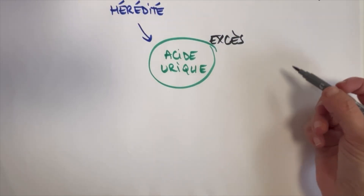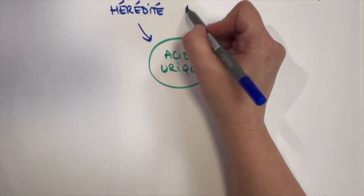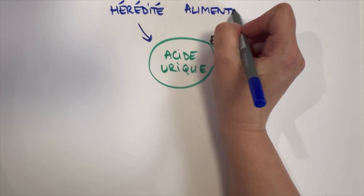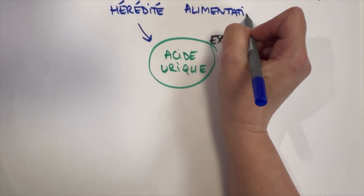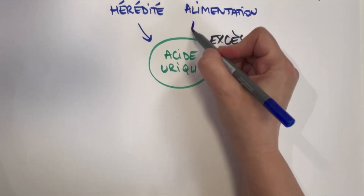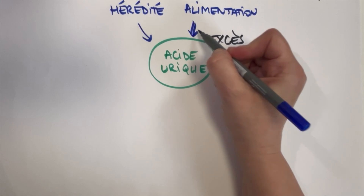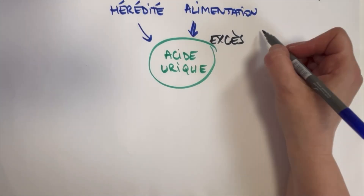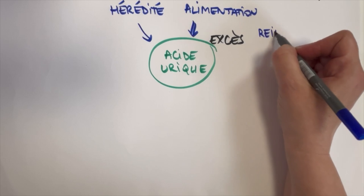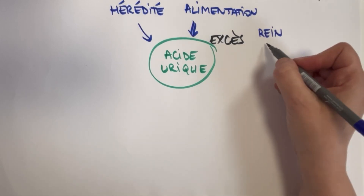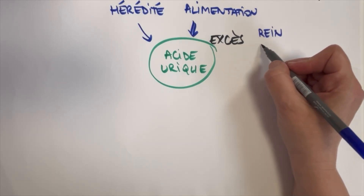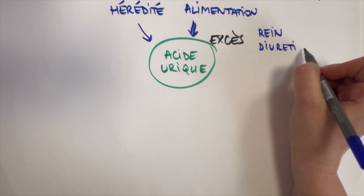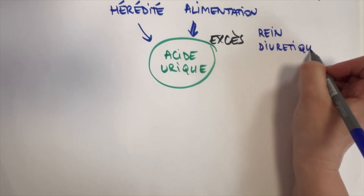Cet excès d'acide urique peut aussi provenir d'un excès d'apport, notamment par l'alimentation, lorsqu'on consomme trop d'aliments tels que la bière, les alcools forts ou les sodas sucrés, ou aussi d'un défaut d'élimination lorsqu'il y a une maladie du rein, une insuffisance rénale, ou lorsqu'on prend certains médicaments, notamment les diurétiques.